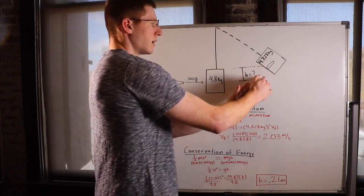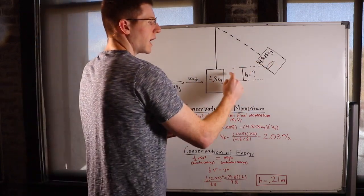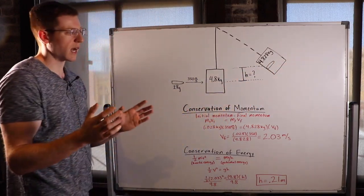move on together in a swing. And what I want to know is how high does the bullet lodged in the block, how high does this swing? So in other words, what is this height?